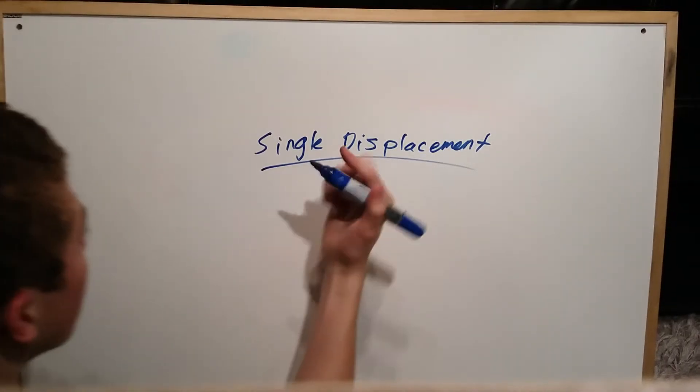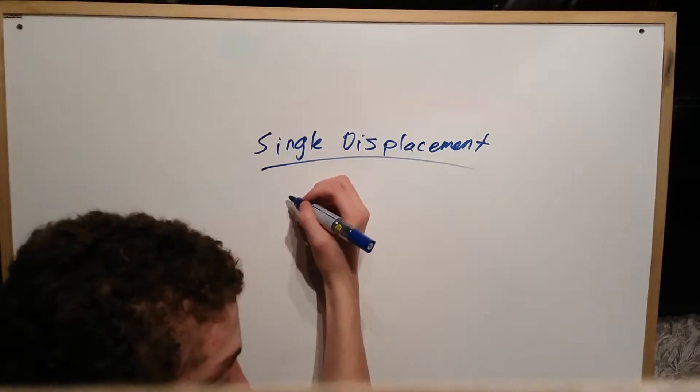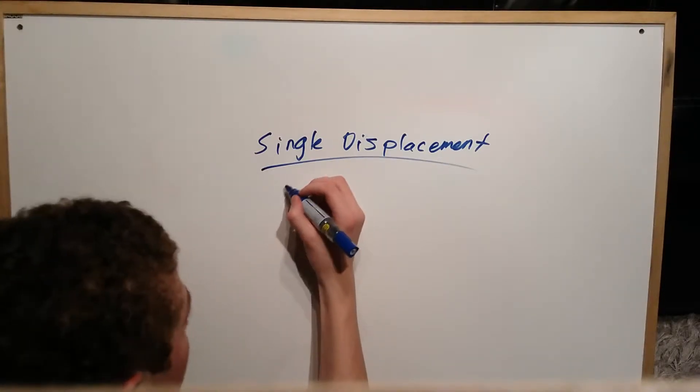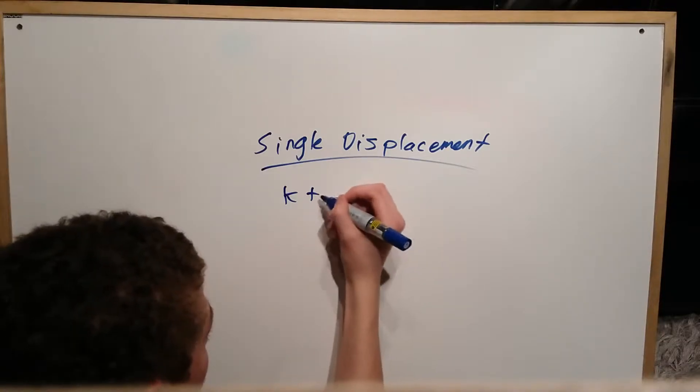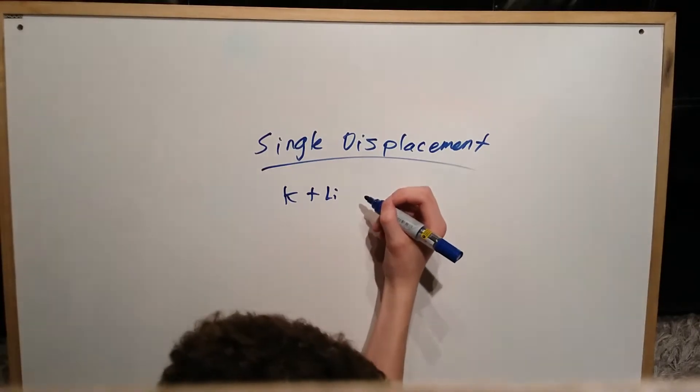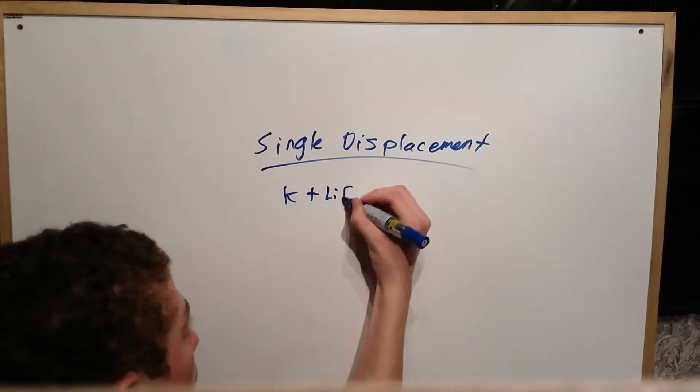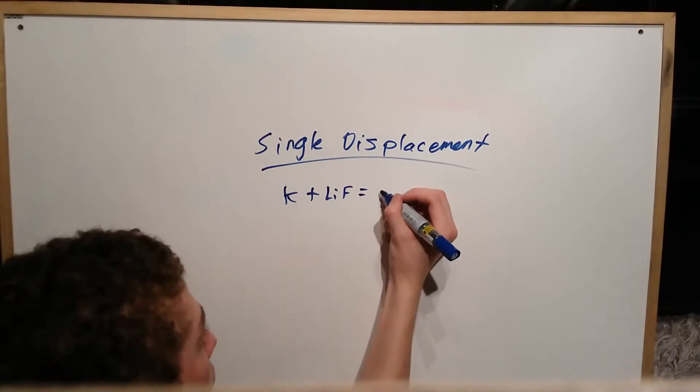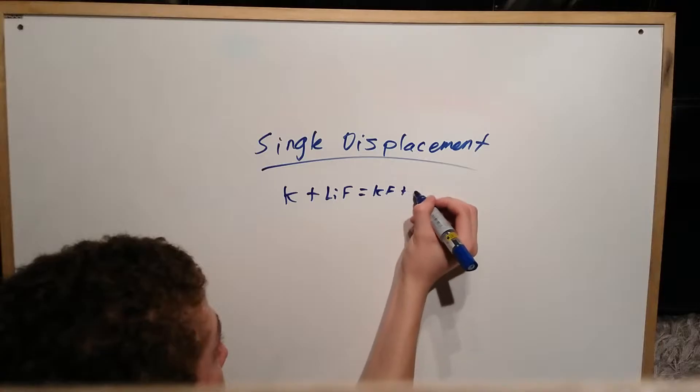So what it is, is when you have one metal, so let's pick a metal, let's do potassium. So K plus lithium fluorine. So LiF equals KF plus Li.